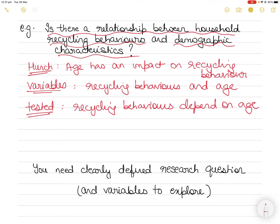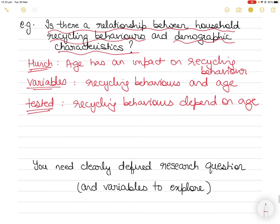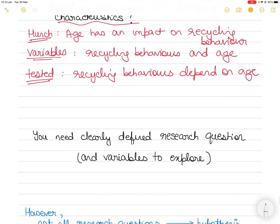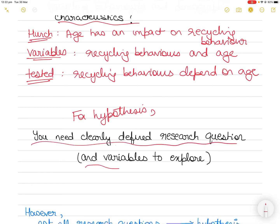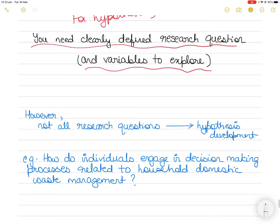Here you have a clearly defined research question, variables to explore, and a hunch about the relationship between those variables that can be tested — and then the hypothesis is easy to formulate. For a hypothesis to be formulated, you need a clearly defined research question which will also give you the variables to explore, and then a hunch about the relationship between the variables that can be tested.